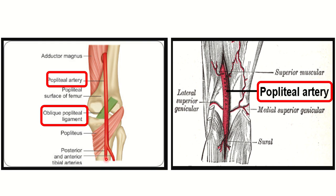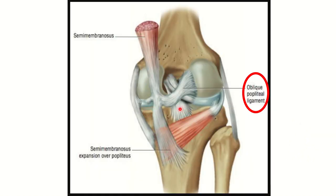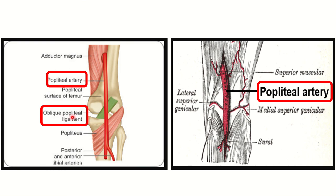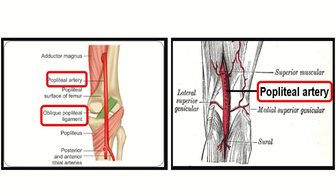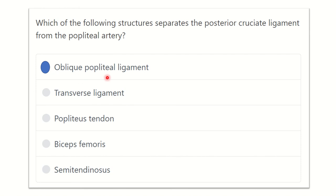The popliteal artery is in the back, with the oblique popliteal ligament in front of it, and in front of the oblique popliteal ligament is the posterior cruciate ligament. So the oblique popliteal ligament lies between these two important structures. The popliteal artery is very deep, difficult to palpate, and very close to the bones in the popliteal fossa. Our final answer is the oblique popliteal ligament.